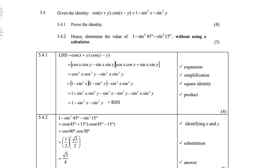5.4: given the identity cos(x + y) · cos(x − y) = 1 − sin²x − sin²y. To prove it, show the left-hand side equals the right-hand side. Expand each factor using compound angle identities from the formula sheet — you should recognize sum and difference of terms as in algebra. cos²x comes from sin²x + cos²x = 1, so cos²x = 1 − sin²x. Multiply out the brackets, collect like terms, and you arrive at 1 − sin²x − sin²y, which equals the right-hand side.